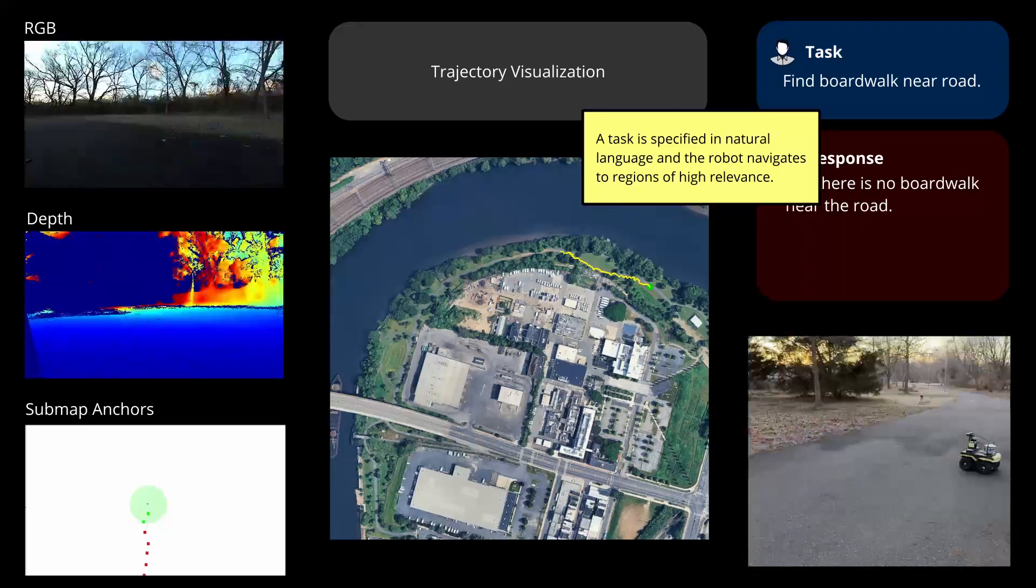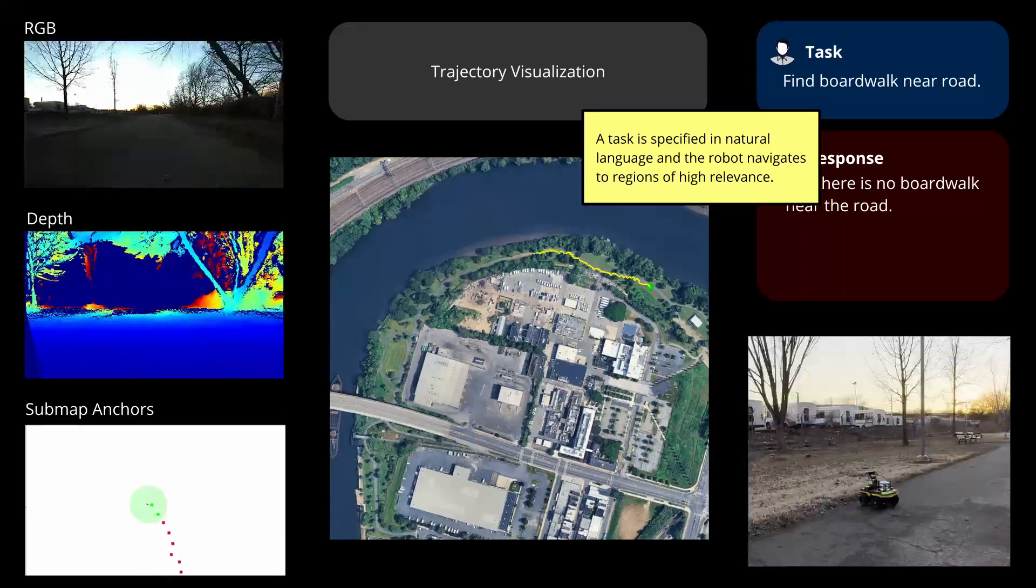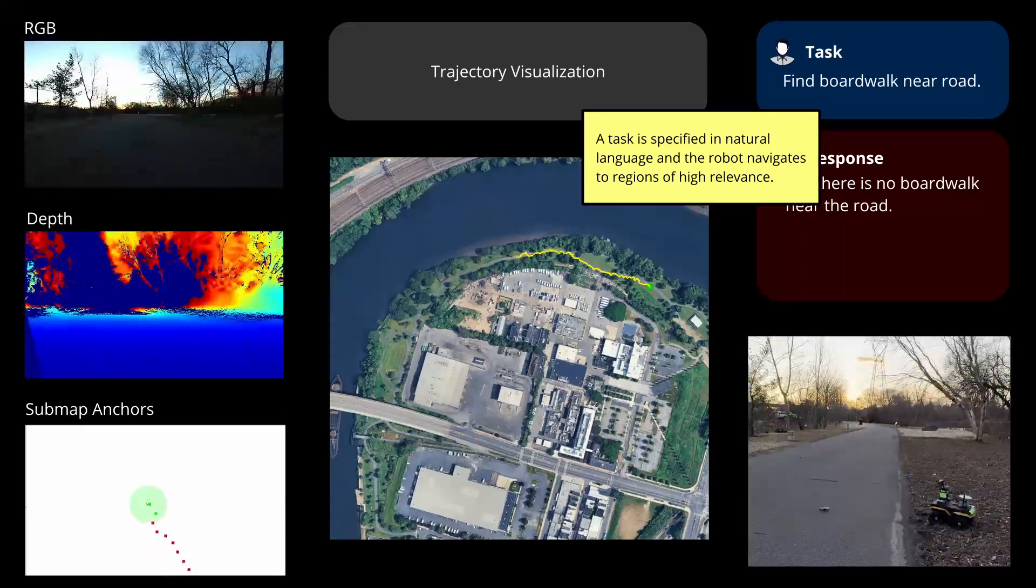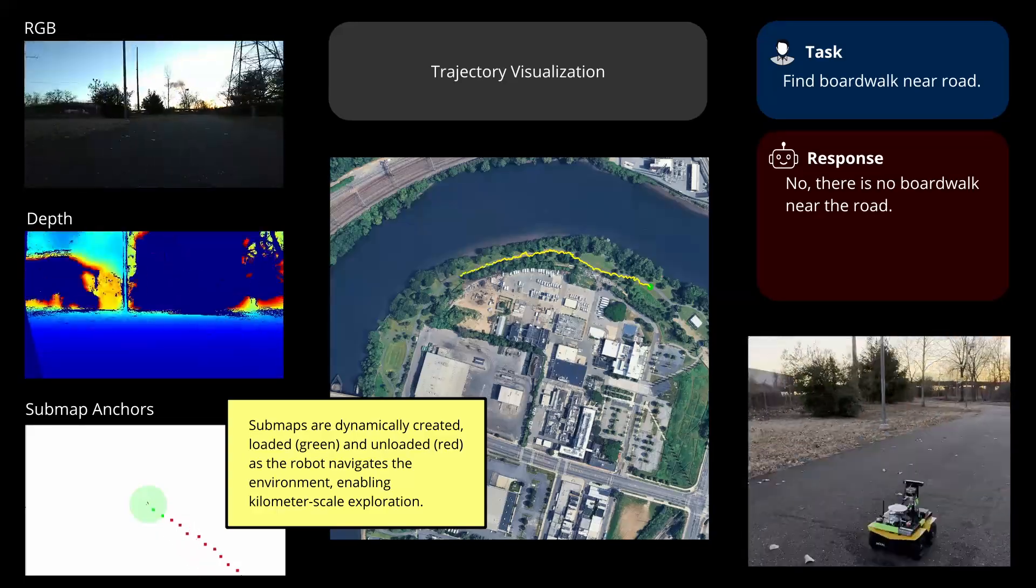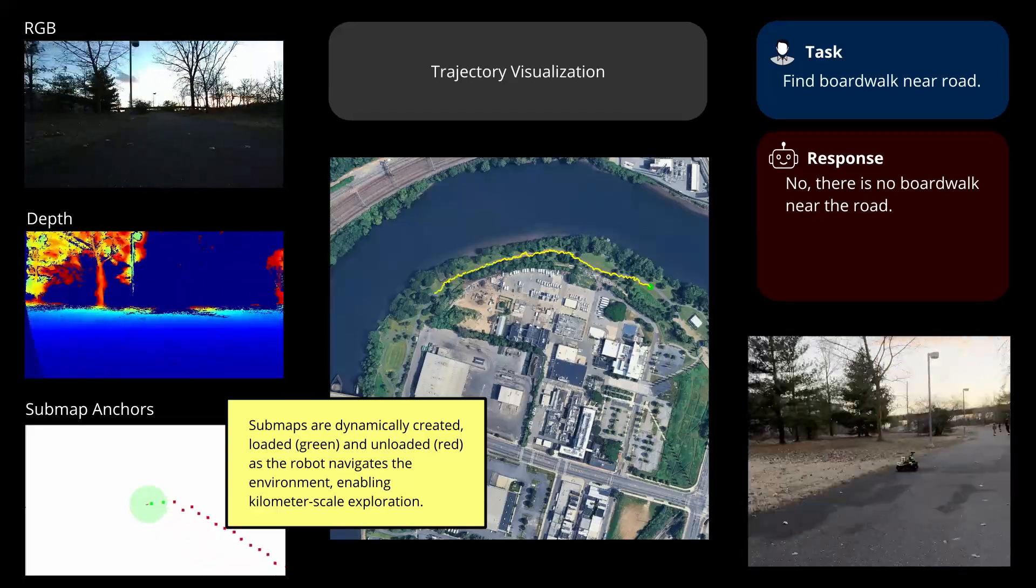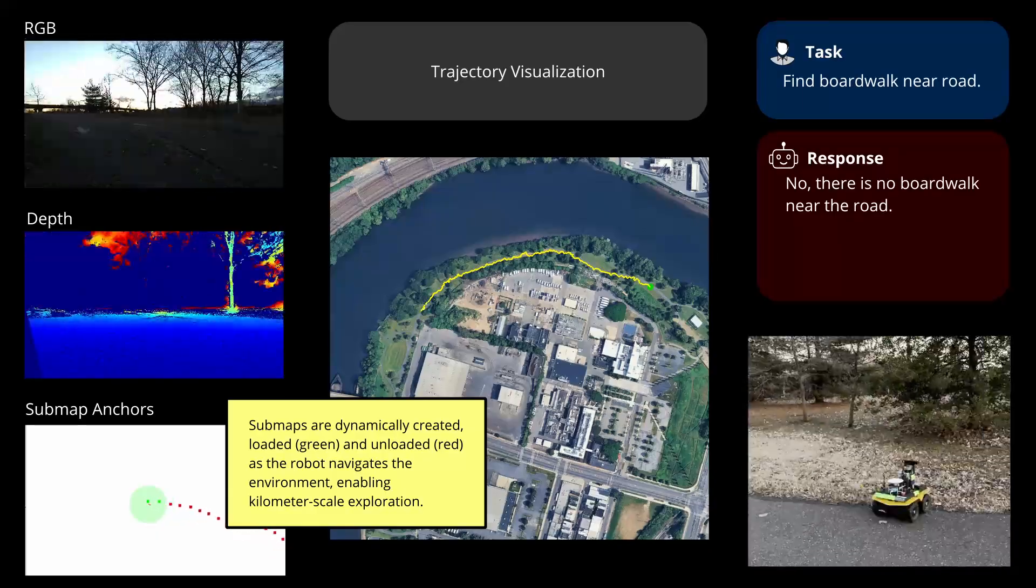In this experiment, the robot is tasked with finding a boardwalk near the road. Sub-maps are dynamically created, loaded, and unloaded as the robot navigates the environment, enabling large-scale exploration.